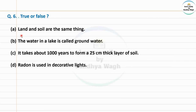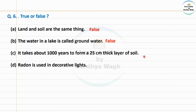True or false. Land and soil are the same thing — False. The water in a lake is called groundwater — False. It takes about 1,000 years to form a 25 cm thick layer of soil — False. Correct statement: it takes about 1,000 years to form a 2.5 cm thick layer of soil. Radon is used in decorative lights — False.